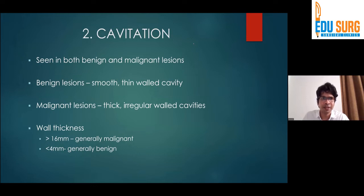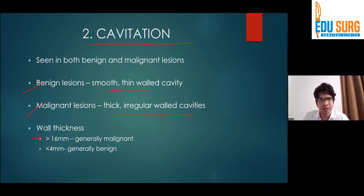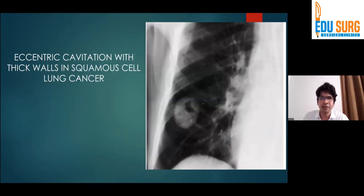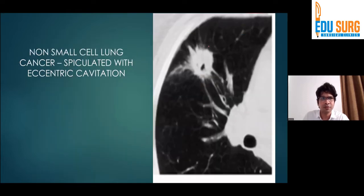Coming to cavitation: generally benign lesions have a thinner wall with a smooth margin, and malignant lesions have a rather thick and irregular wall. Any wall which is more than 16 mm is generally malignant, and less than 4 mm is generally benign. This is an example of an aspergillus infection showing an air-fluid level with a thickish wall. This is a peripheral lesion on X-ray with a thick wall and small cavitary area that turned out to be lung cancer. Another example is a small cell lung cancer with lobulated margins and a small area of cavitation.